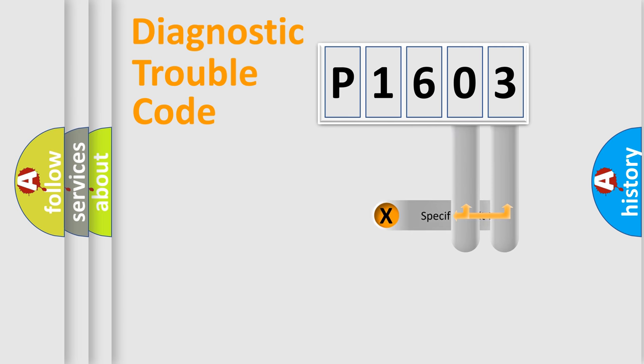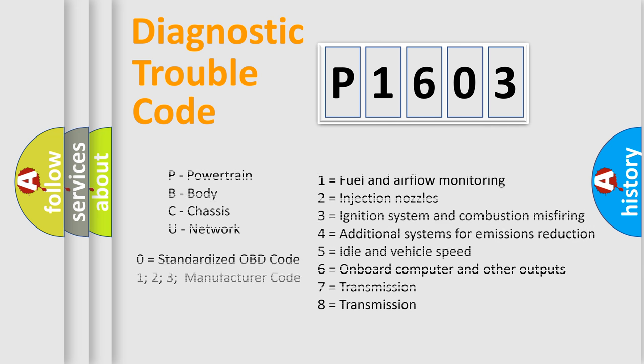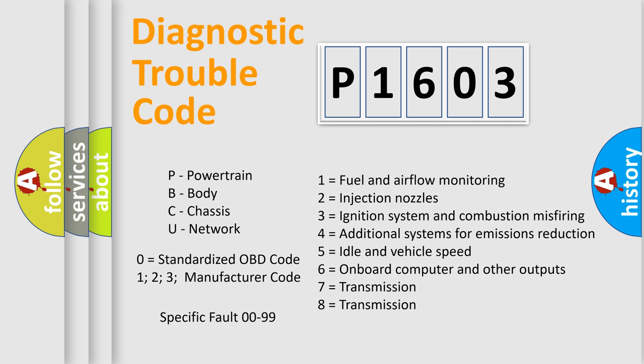Only the last two characters define the specific fault of the group. Let's not forget that such a division is valid only if the second character code is expressed by the number zero.